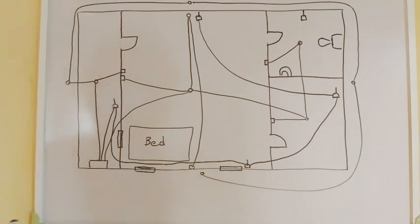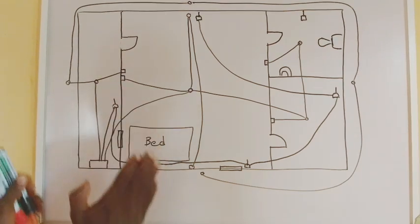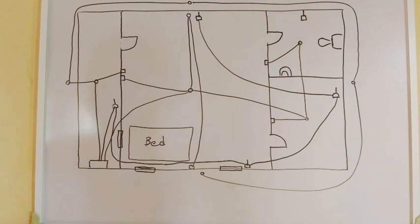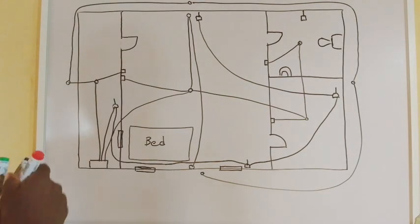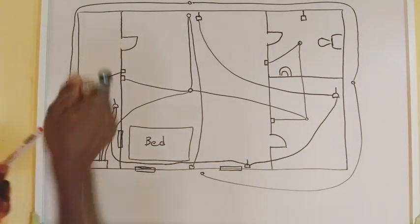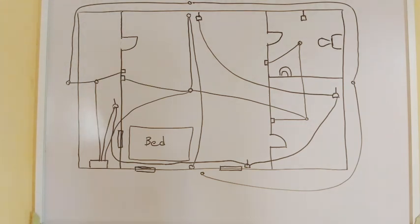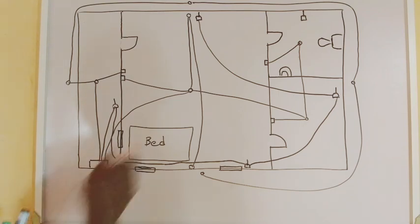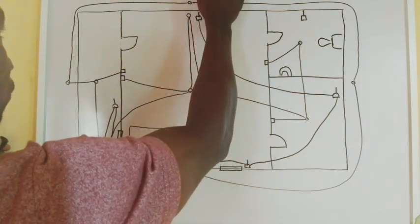So today, we want to look at the wiring. We want to look at the preparation before we start wiring. In wiring of a building like this, remember we are talking about the lighting points and the socket outlet. So in lighting, we make use of 1.5 red, 1.5 black. Then when we talk about the socket outlet, we make use of 2.5 red, 2.5 black.